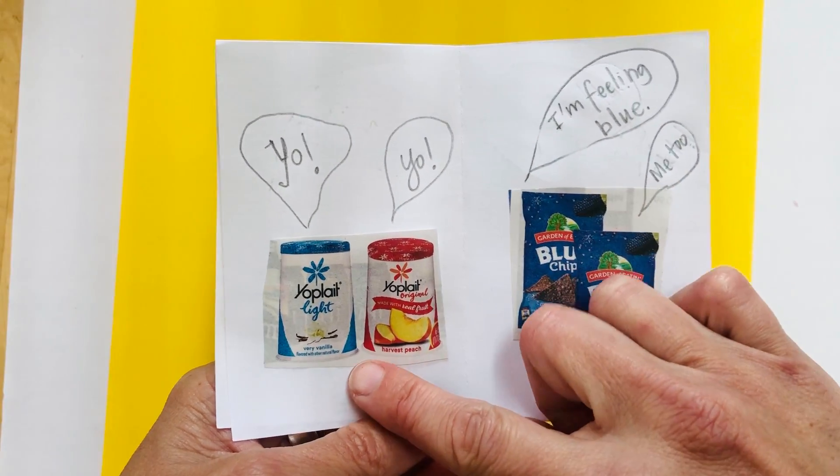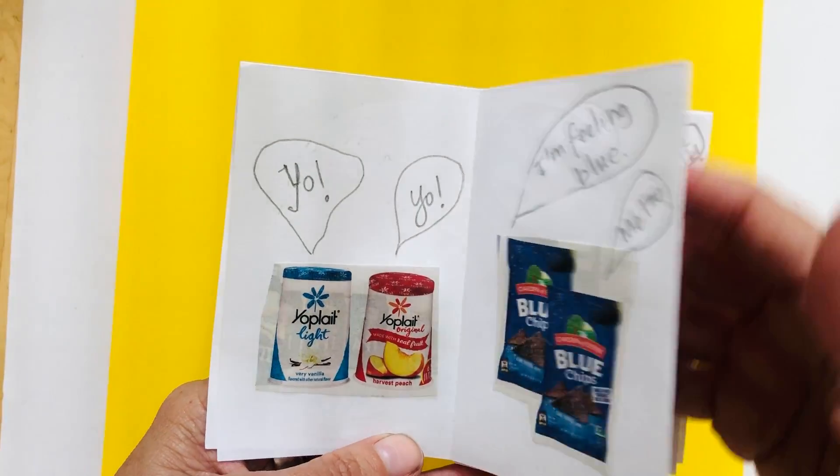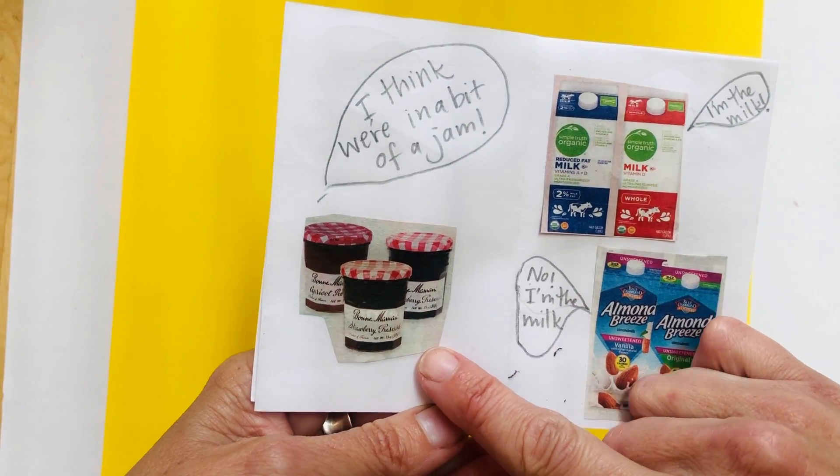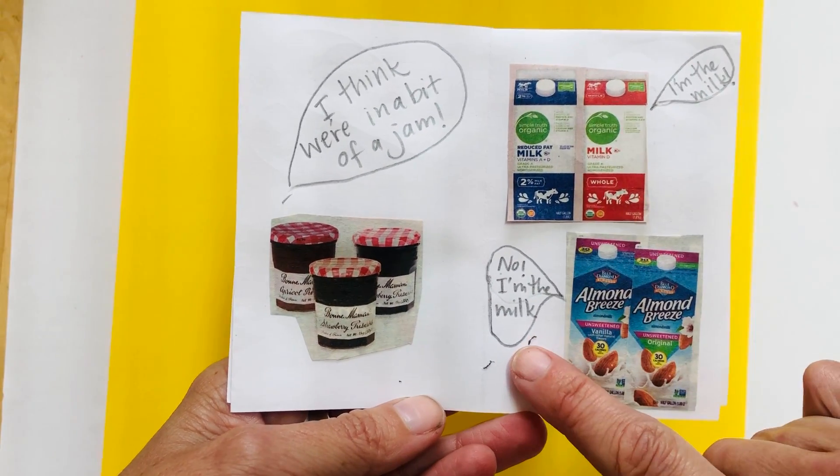What does the yogurt say? Yo, yo. The blue chips. I'm feeling blue. Me too. I think we're in a bit of a jam. I'm the milk. No, I'm the milk.